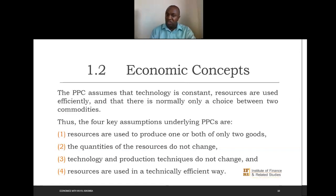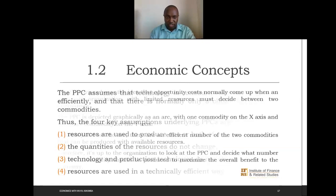The assumptions of the PPC are: number one, resources are used to produce one or both of two goods — not more than two; quantities of resources do not change; technology and production techniques do not change; and resources are used in a technically efficient way. In other words, the PPC assumes technology is constant, resources are used efficiently, and there is only a choice between two commodities.